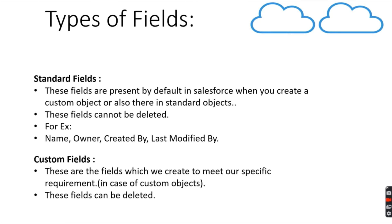What are the different types of fields in Salesforce? We have basically two types: standard fields and custom fields. Standard fields are present in Salesforce by default — when you create a custom object, or they are present in standard objects. And these standard fields we cannot delete. For example, we have the Name field, Owner field, Last Modified By, Created By, etc.